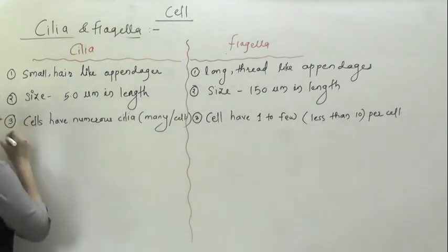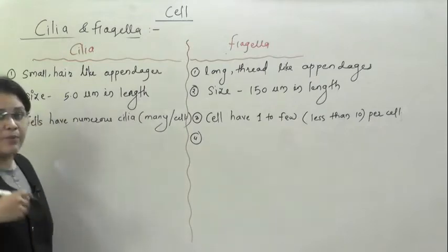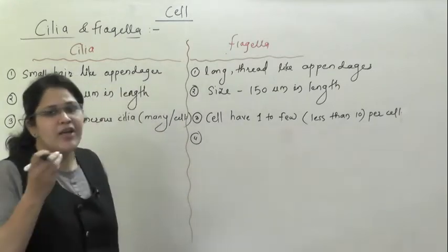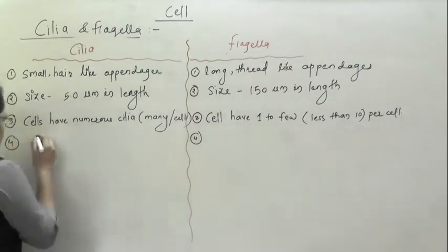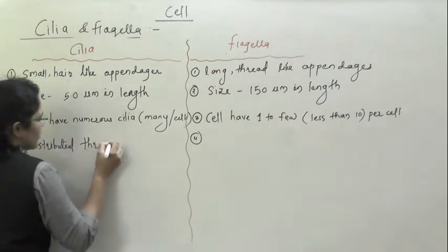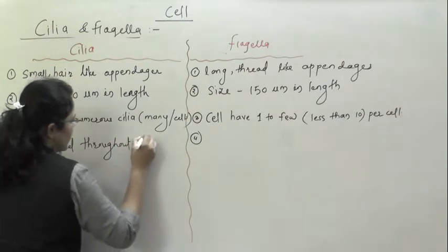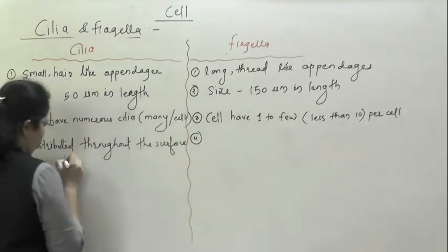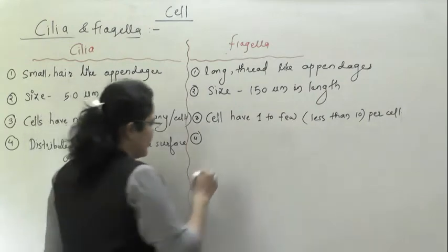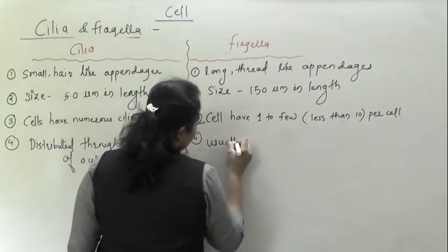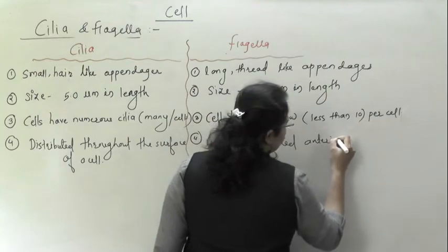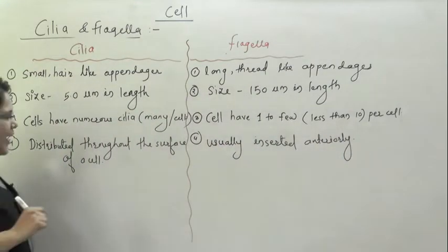Next difference is location or occurrence. Cilia are distributed throughout the surface of the cell. Whereas flagella are usually inserted anteriorly — present only on one side of the cell.